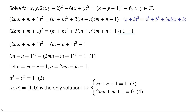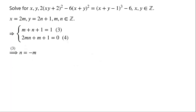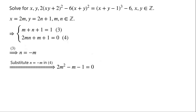Then we have m plus n plus 1 equals 1, and 2mn plus m plus 1 equals 0. From the first equation, n equals negative m. Substituting n equals negative m into the second equation, we have 2m squared minus m minus 1 equals 0. By factorizing, we have (m minus 1) times (2m plus 1) equals 0. As m is an integer, so m equals 1.